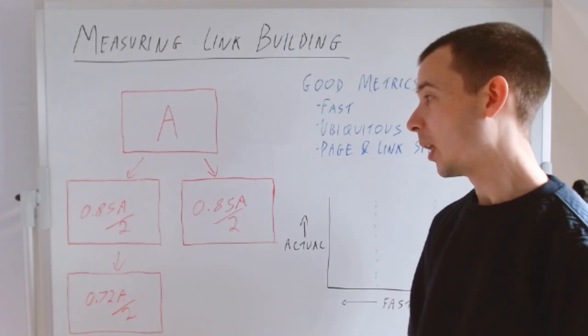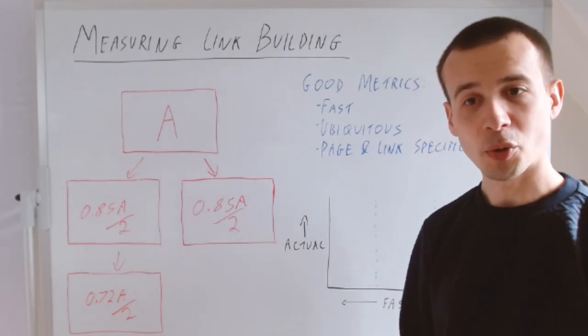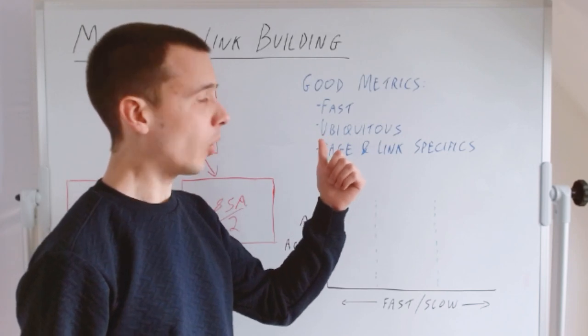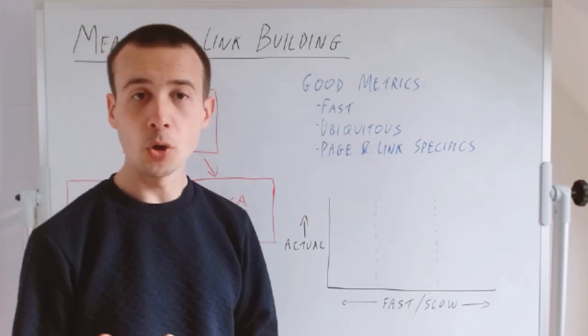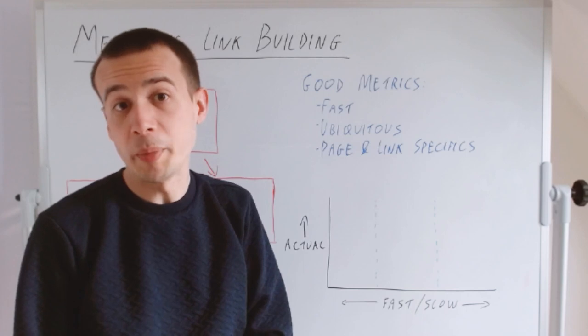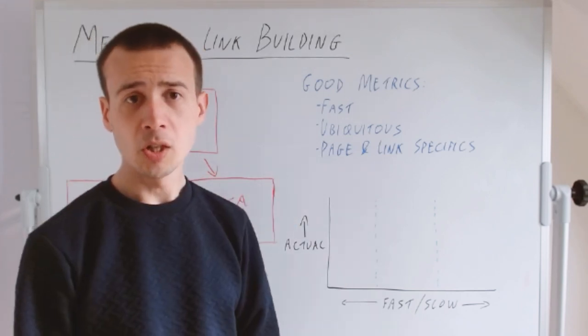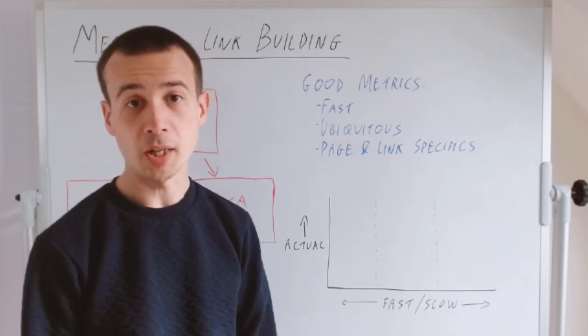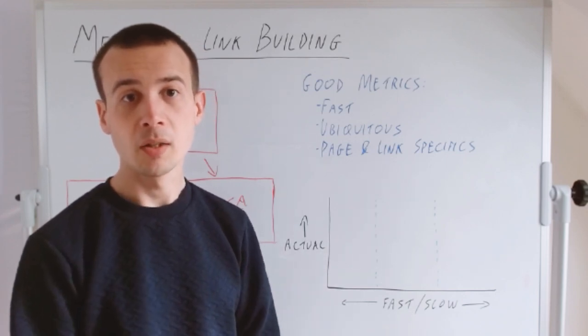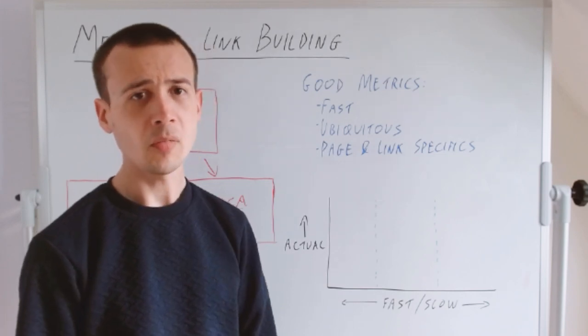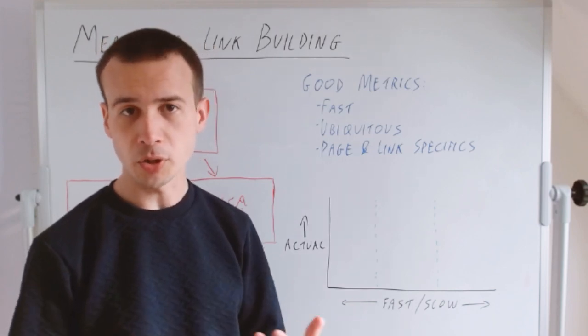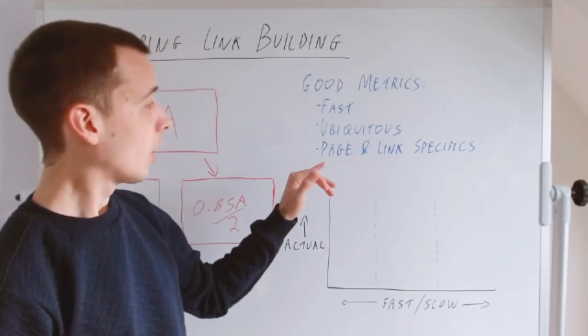If we bring this back on topic to actual metrics for link building, there are a few qualities we're looking for. We want metrics that are fast—available as quickly as possible so we can report to our clients or boss. We want metrics that are ubiquitous, so when I say I've got you a link which had DA 90, there's a good chance they know what that means, whereas if I say it had a Tom Kappa score of 38B, they'd say what are you talking about?